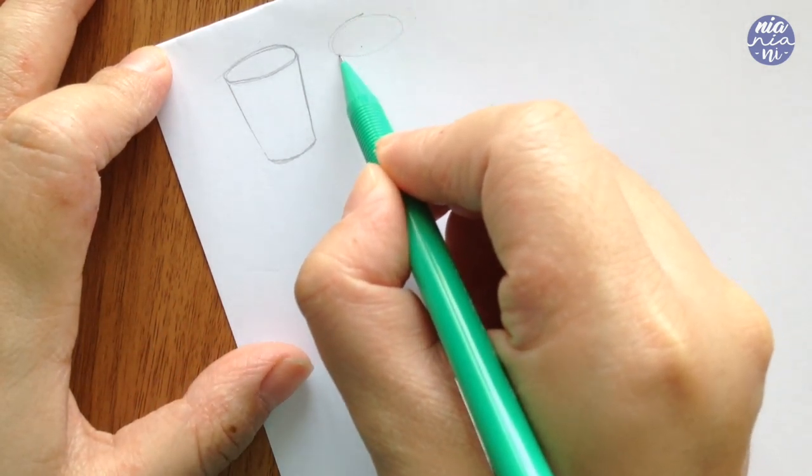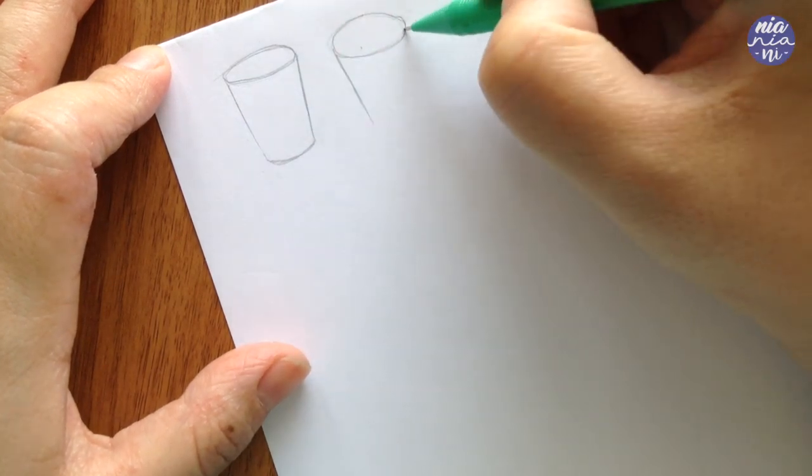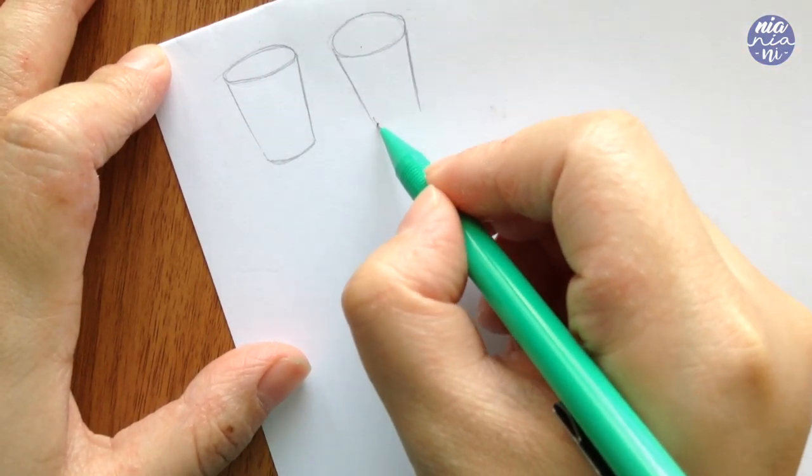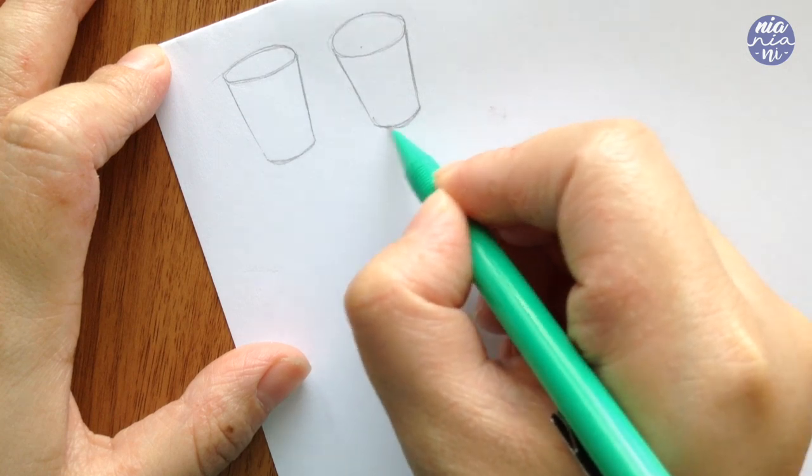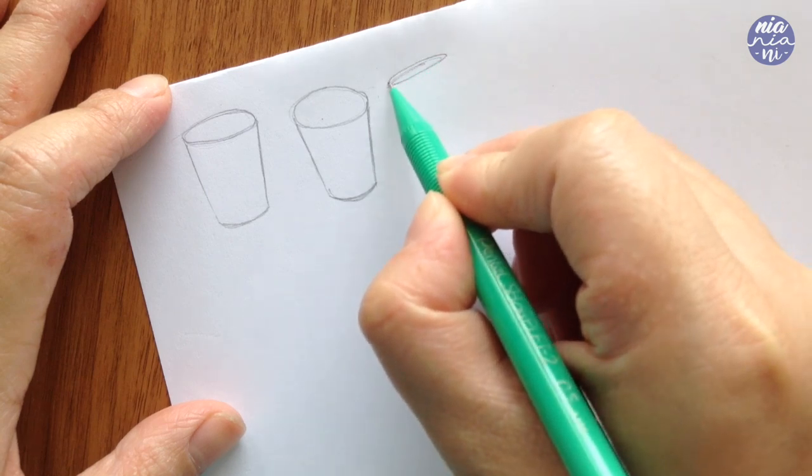To make the cups, I'm going to first start with an oval and continuing to the bottom of the cup by drawing out two slightly diagonal lines, finished off with a curved line at the bottom that is around the same curvature as the oval at the top.